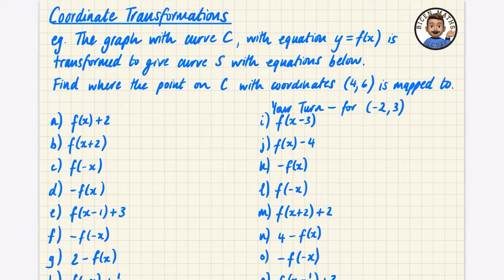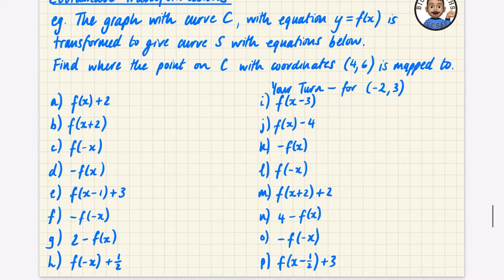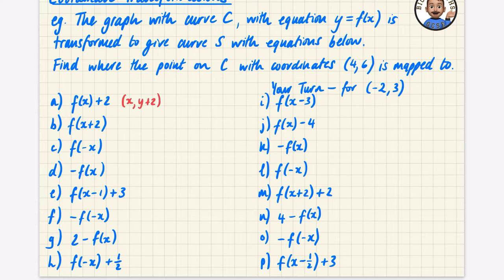We're going to take the original coordinate (4, 6) and think about where it gets mapped in all the different scenarios. For y = f(x) + 2, the plus 2 means it's just going to move up two spaces. The y coordinate just has two added to it, so instead of (4, 6) it becomes (4, 8).